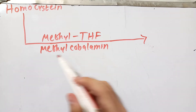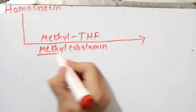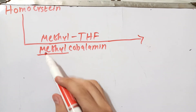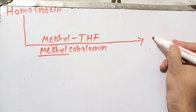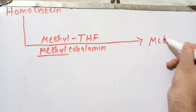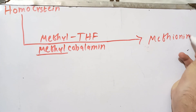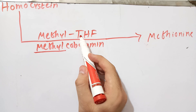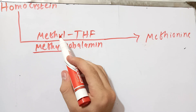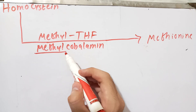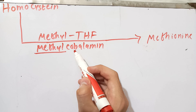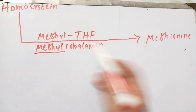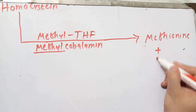The methyl group present on methyl cobalamin is transferred to homocysteine, forming methionine. Then the methyl group from methyl tetrahydrofolate is donated to cobalamin so that cobalamin is regenerated and tetrahydrofolate is left. This is one of the two reactions that requires vitamin B12.